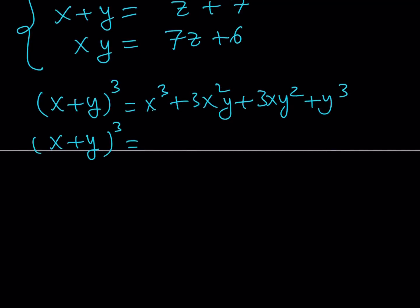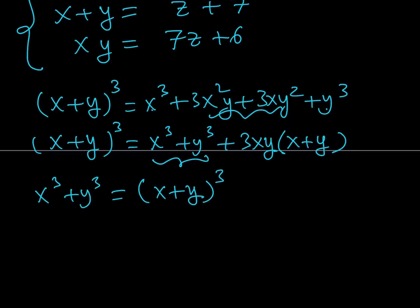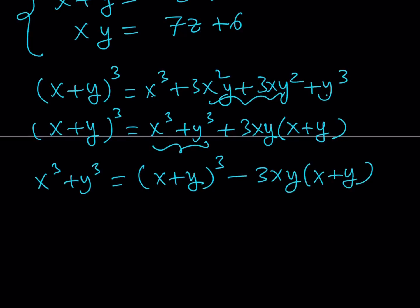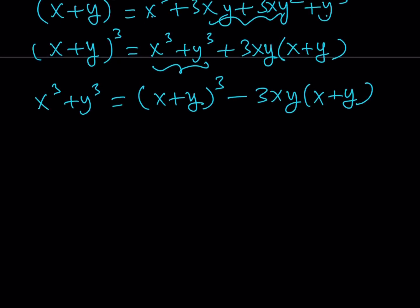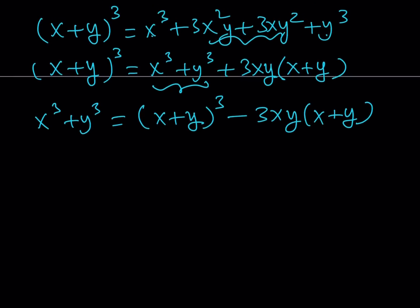So I want to write, put these two together, the cubes, and then I would like to separate these two, the two terms in the middle, and I also want to factor the 3xy, which is the greatest common factor, and write it like this. So from here, my goal is to isolate x cubed plus y cubed. So x cubed plus y cubed can be written as x plus y quantity cubed minus 3xy times x plus y. This identity will be very helpful.